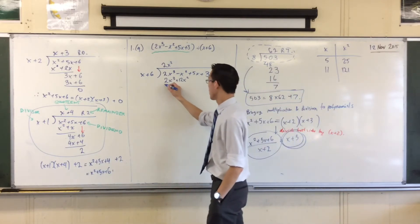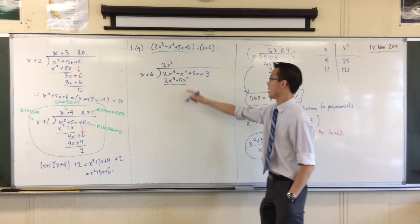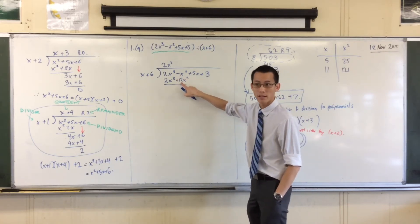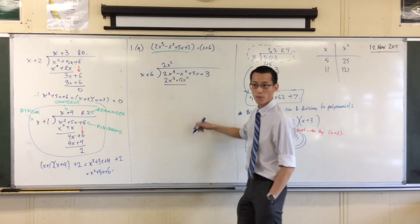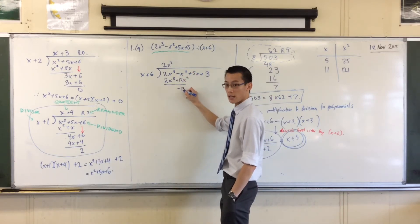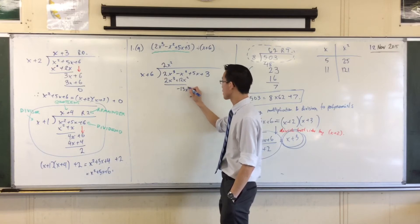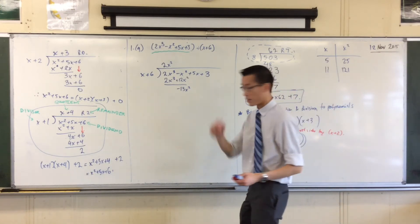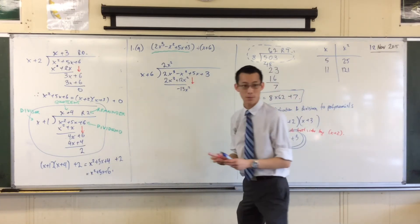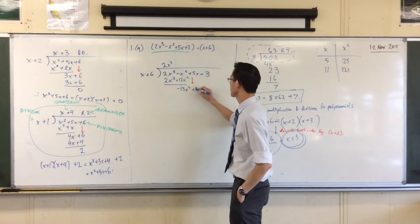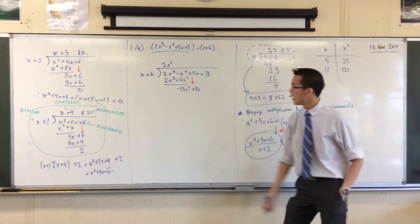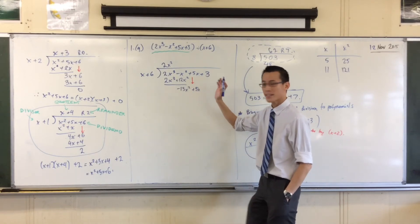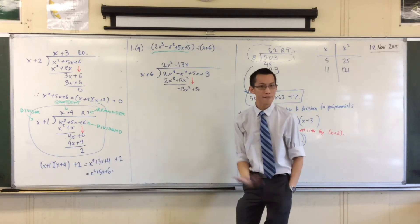What do I do with this? I'm up to the subtraction step. Be careful for your signs here. Minus x squared, and I'm going to subtract 12x squared. Minus 1, minus 12. That's minus 13, x squared. So, I've done the subtraction. What do I do after the subtraction? Good. So, I'm getting all of these pairs of terms. So, that 5x, he's going to climb down. And then I ask you, how many x's can I fit into minus 13x squared? Answer, minus 13x.